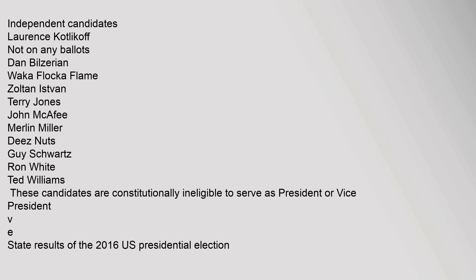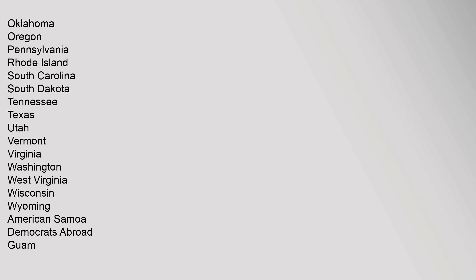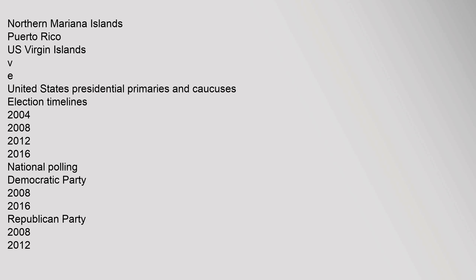State results of the 2016 U.S. Presidential Election: Alabama, Alaska, Arizona, Arkansas, California, Colorado, Connecticut, Delaware, District of Columbia, Florida, Georgia, Hawaii, Idaho, Illinois, Indiana, Iowa, Kansas, Kentucky, Louisiana, Maine, Maryland, Massachusetts, Michigan, Minnesota, Mississippi, Missouri, Montana, Nebraska, Nevada, New Hampshire, New Jersey, New Mexico, New York, North Carolina, North Dakota, Ohio, Oklahoma, Oregon, Pennsylvania, Rhode Island, South Carolina, South Dakota, Tennessee, Texas, Utah, Vermont, Virginia, Washington, West Virginia, Wisconsin, Wyoming, American Samoa, Guam, Northern Mariana Islands, Puerto Rico, and U.S. Virgin Islands.